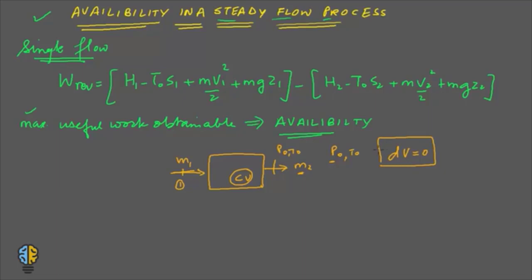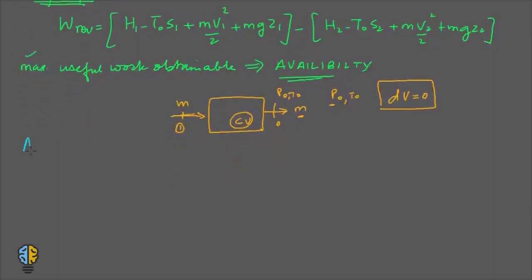Let us designate the initial state of the mass entering the control volume with no subscript, and the final state as the dead state with subscript 0. The mass entering and leaving is the same; what is different are the conditions. In this case, the maximum work obtainable, or the availability A, is defined accordingly.